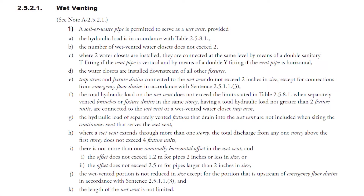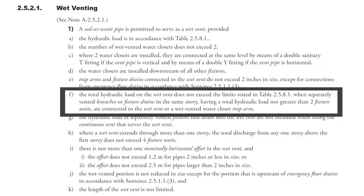Let's go into the next code clause, 25211F. The total hydraulic load on the wet vent does not exceed the limits stated in table 2581 when separately vented branches or fixture drains in the same story having a total hydraulic load not greater than two fixture units are connected to the wet vent or a wet vented water closet trap arm. This code clause is a mouthful — a huge run-on sentence with multiple pieces — so let's break it down piece by piece.